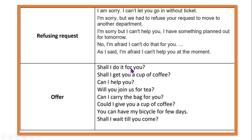Offer: 'Shall I do it for you?', 'Shall I get you a cup of coffee?', 'Can I help you?', 'Will you join us for tea?', 'Can I carry the bag for you?' - the student sees you carrying heavy baggage and says 'can I carry the bag for you?' meaning an offering. 'Could I give you a cup of coffee?' - if someone is very tired and exhausted, somebody offers a cup of coffee. 'You can have my bicycle for a few days' - here the word 'my' is important, meaning an offering from the speaker's side. 'Shall I wait till you come?' is also an offering, or could also mean a suggestion.